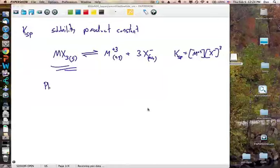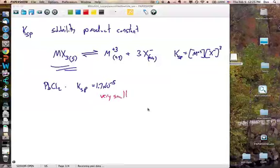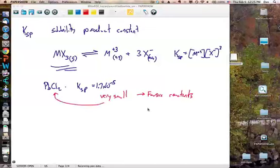For something like lead chloride, the Ksp of that material equals 1.7 times 10 to the negative 5th. What does that tell us? It tells us that this is a very small number. Very small equilibrium constants mean that the reaction favors primarily the reactants, which is another way of saying that lead chloride does not dissolve.